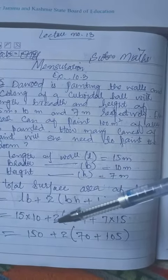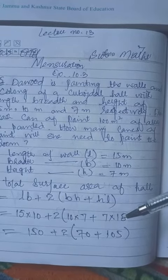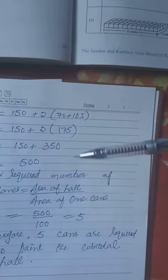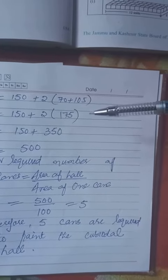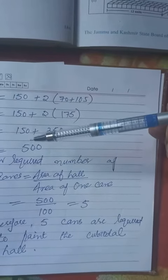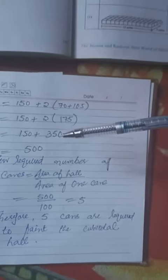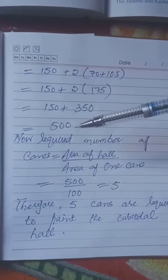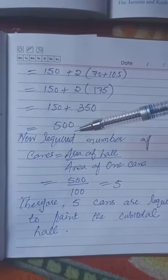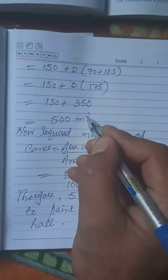= 150 + 2(175) = 150 + 350 = 500 square meters. So the total area is 500 square meters.